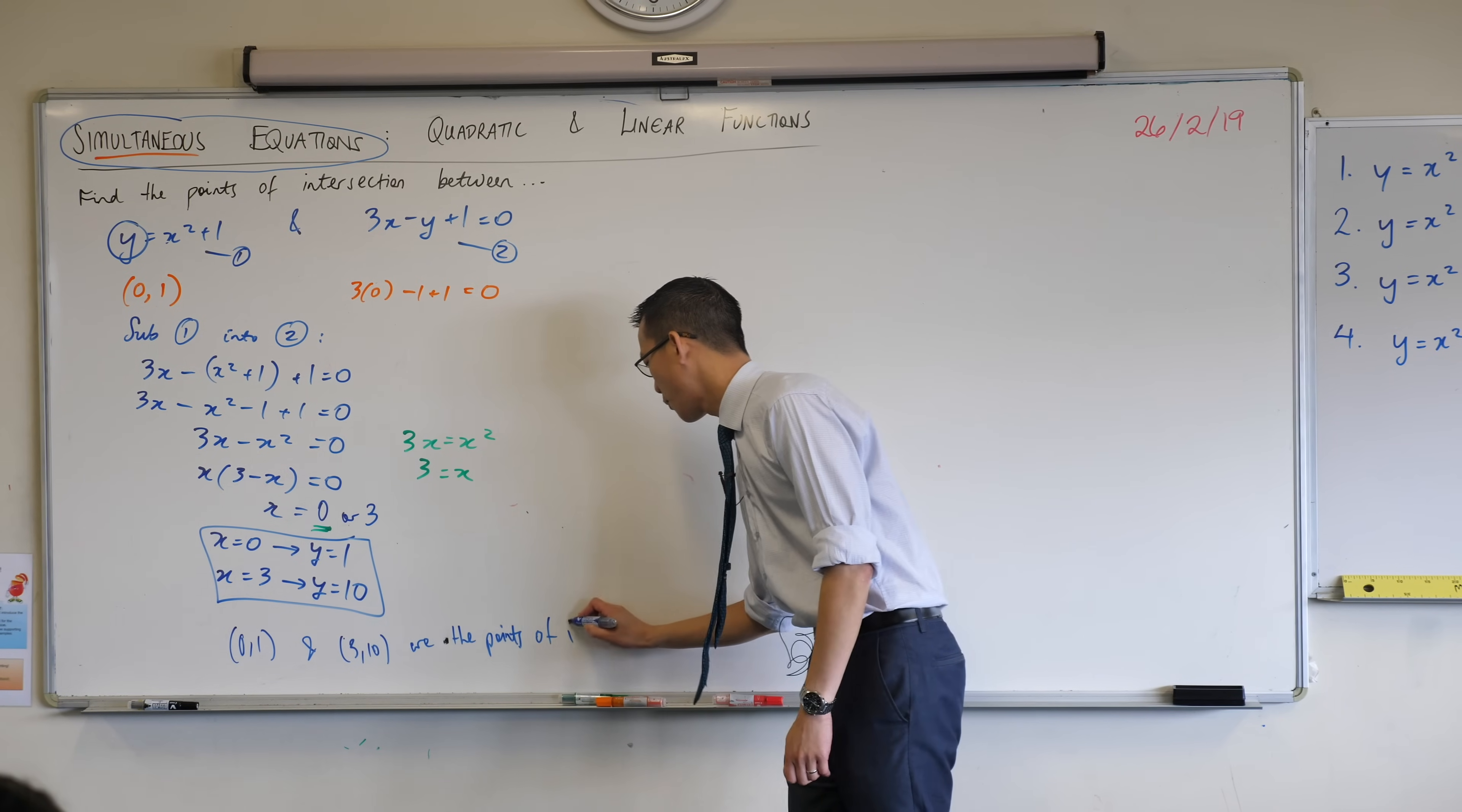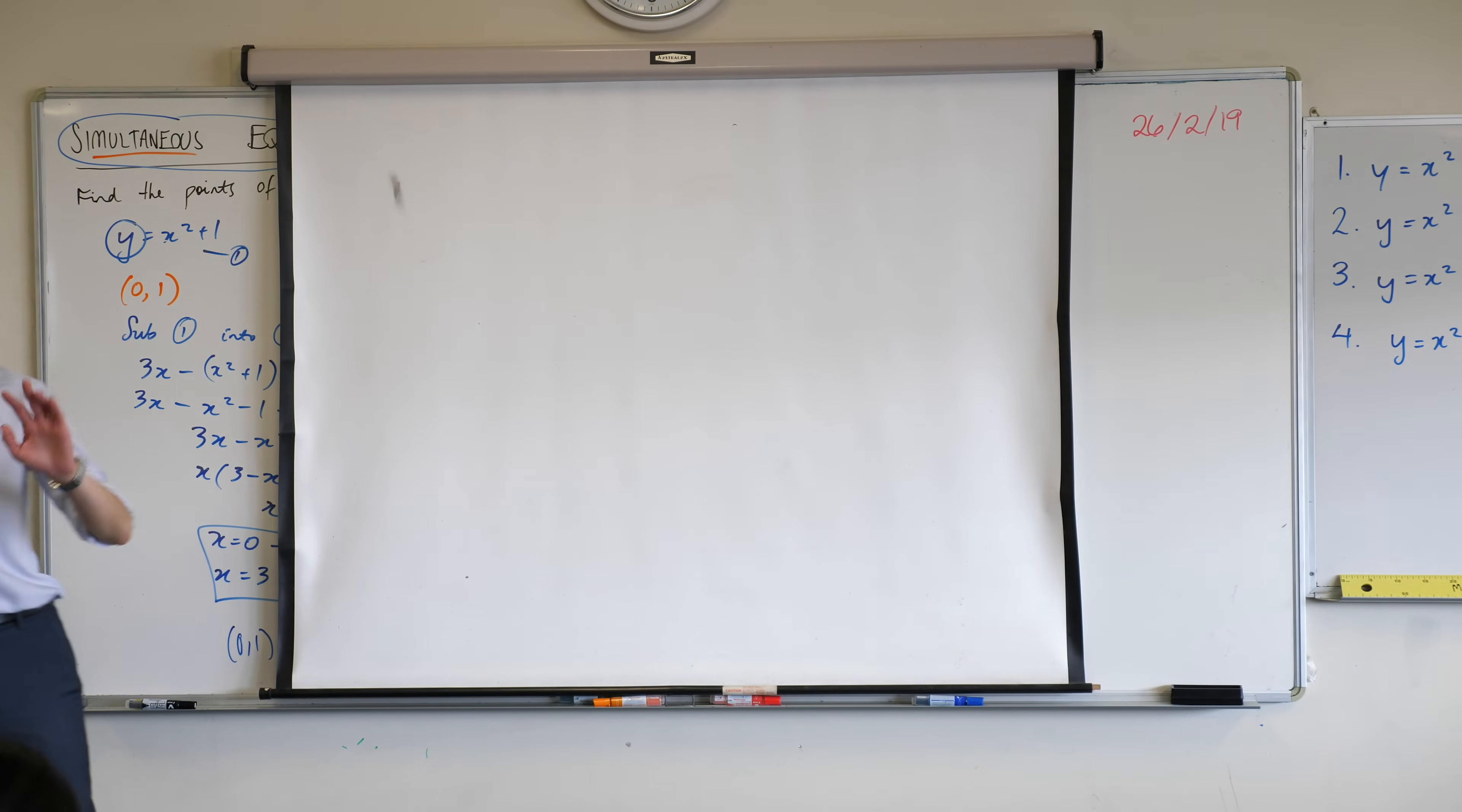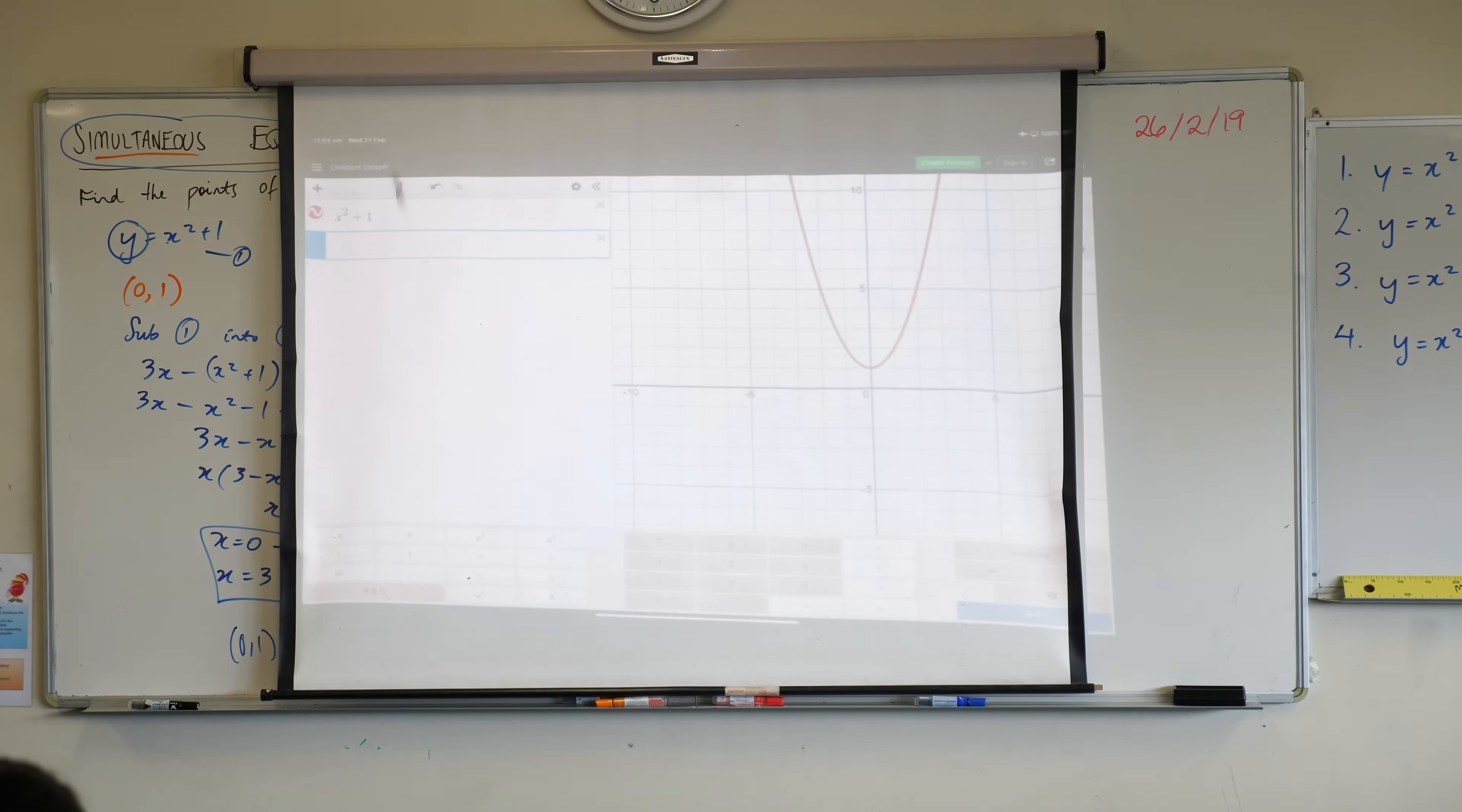Now, I asked you before to just pull up Desmos for me. I want to confirm and also understand the meaning of what we just did. So, if you take Desmos and you pop the two original equations in that we started with, what do we got here? x squared plus one. There's the first one. And then we've also got 3x minus y plus one. By the way, what form is that line in?